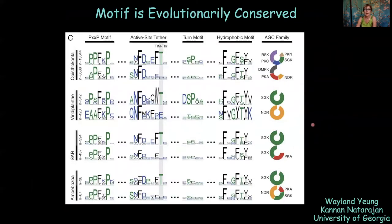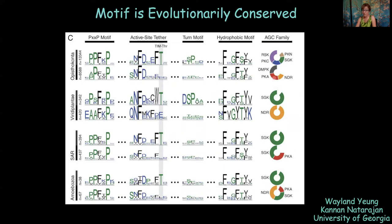Wayland in Kanan's lab did a bioinformatic analysis and found that this motif was conserved all the way back to amoeba — animals and yeast both have it. He divided kinases into those with this conserved threonine and those without. There's a whole group of kinases that have this conserved motif all the way back to amoeba. When separated, these are the known TORC2-regulated kinases we've been talking about — present in PKC and all these other TORC2-regulated kinases, but not in ones like PKA — indicating this motif may be functionally rather important.